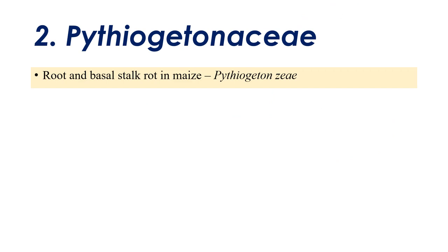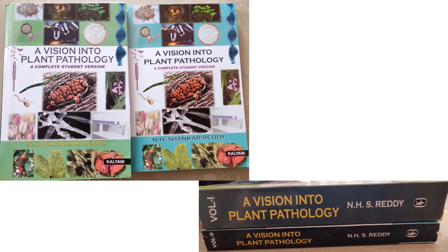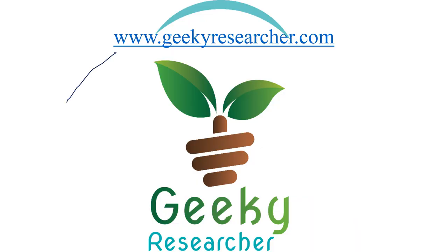The next family is Pythiogetonaceae. There is only one disease under this family: root rot and basal rot of maize, caused by Pythiogetonaceae. For further information, students can refer to the book 'A Vision into Plant Pathology — Complete Student Version.' For doubts and clarification, students can reach us at www.geekyresearcher.com. Stay geeky and stay tuned — we are Team Geeky Researchers.